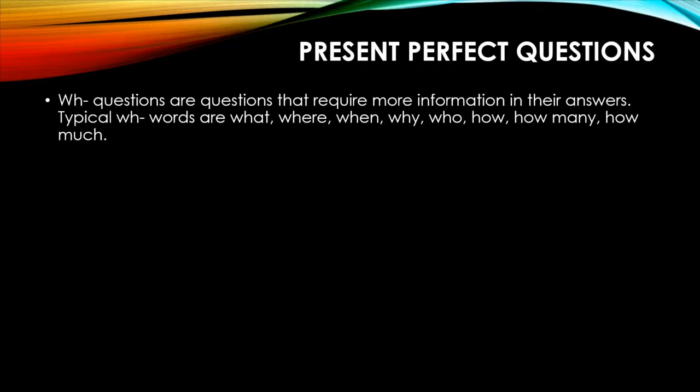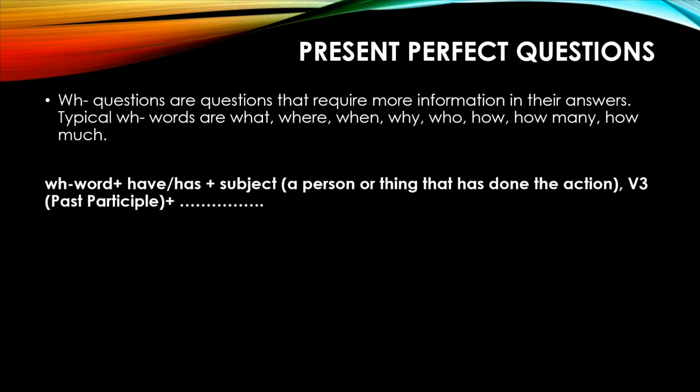Let's look at present perfect questions. If we make sentences into questions, we place WH question words, which are question patterns that require more information in their answer. Typical WH words are: what, where, when, etc. The structure is: WH word, then 'have' or 'has', then the subject, then the verb in past participle form.